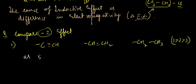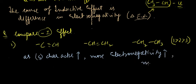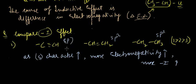The reason is: as s-character increases, electronegativity increases, and as electronegativity increases, the minus-I effect increases. Looking at the hybridization of the carbon atoms — sp has 50% s-character, sp2 has 33% s-character, and sp3 has 25% s-character. So the sp carbon is most electronegative, giving the highest minus-I effect.